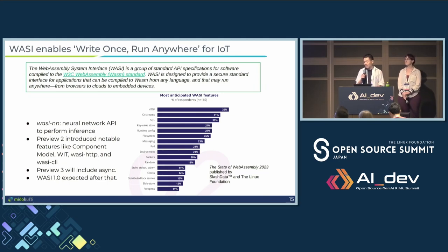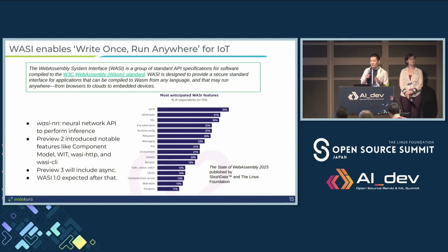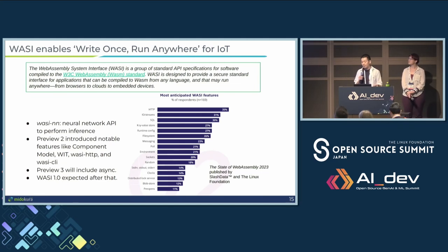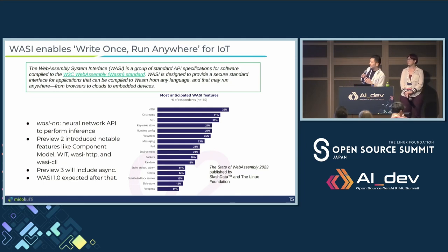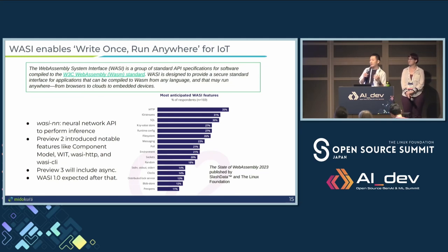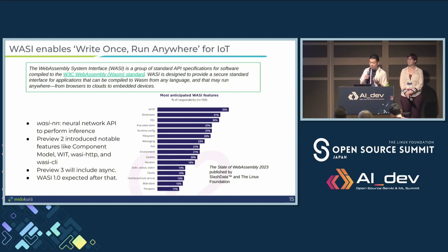WASM is portable, and ultimately we want to achieve write-once, run-anywhere — even on IoT devices. This is what we want because it's so fragmented. But what if the application needs to access host resources or native libraries? For example, if you want to fetch an image from a sensor for an AI app, and the sensor API is different for different sensors, now you have a non-portable application because you have to code against every different interface.